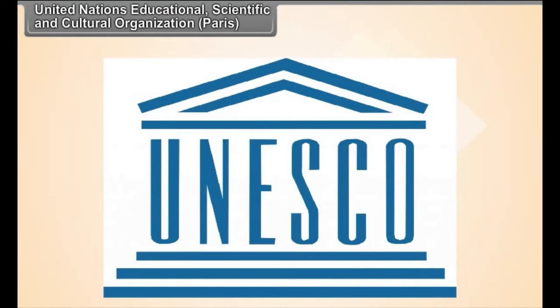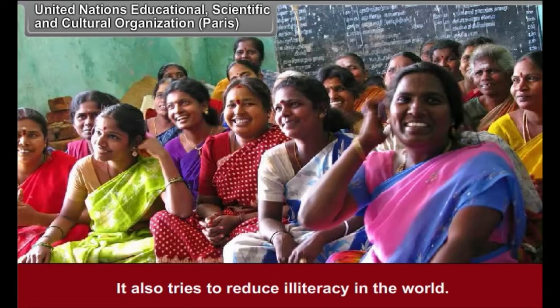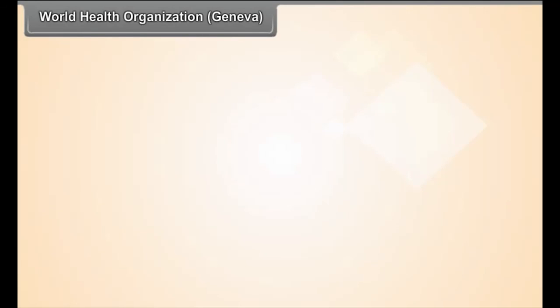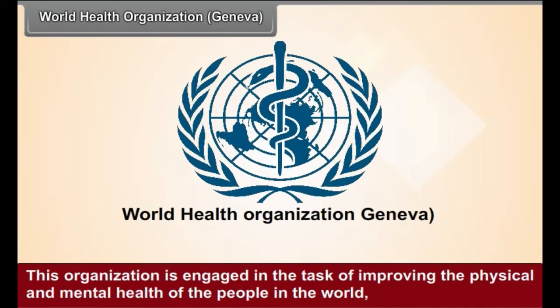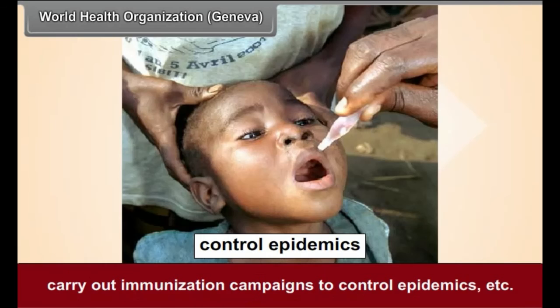The United Nations Educational, Scientific, and Cultural Organization, based in Paris, promotes interaction between different countries in the fields of education, science, and culture. It also tries to reduce illiteracy in the world. The World Health Organization, based in Geneva, is engaged in improving the physical and mental health of people in the world, and carries out immunization campaigns to control epidemics.